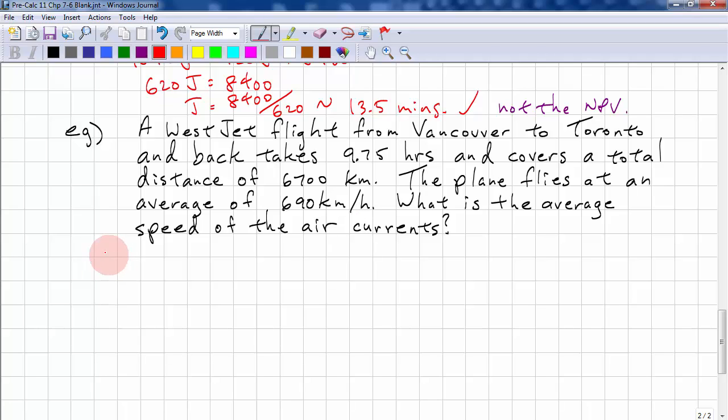Okay? So, let C be the air current speed. Okay, so time equals distance over velocity. D over, the velocity is 690 plus C. Coming back the other way, we have D over 690 minus C.